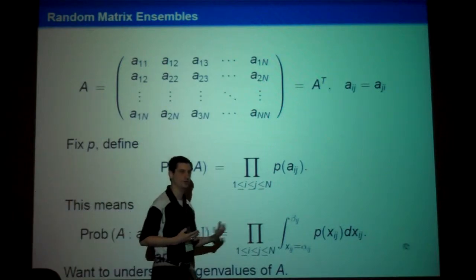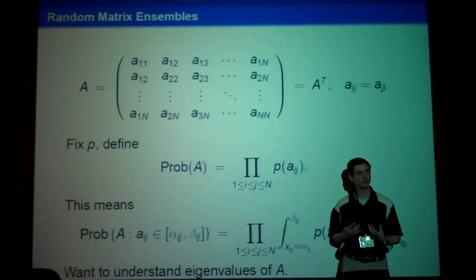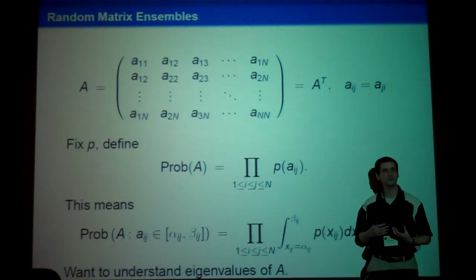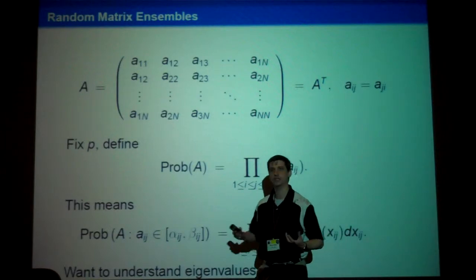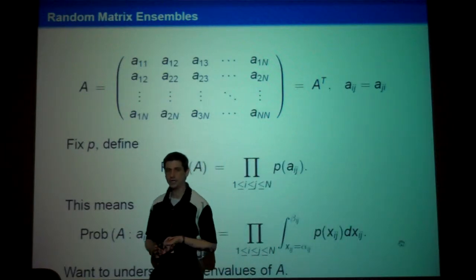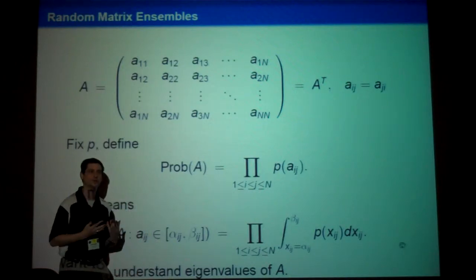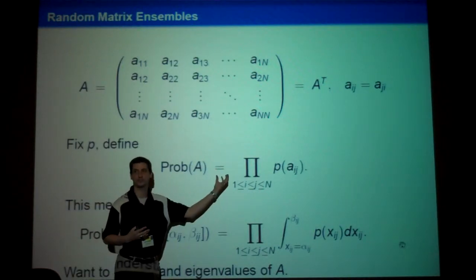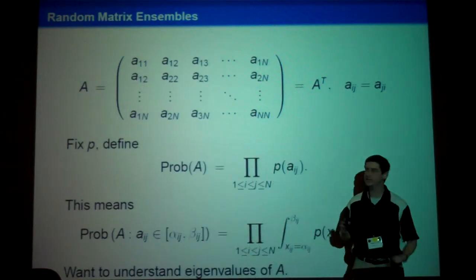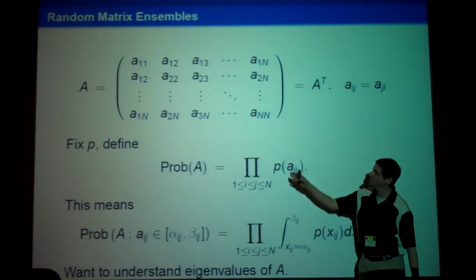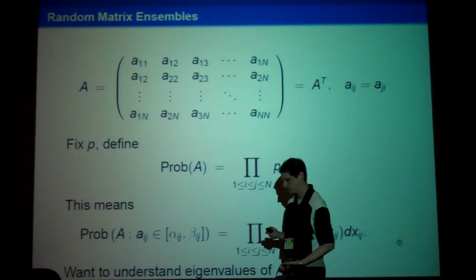From a number theory point of view, this random matrix model was very influential in the early days of the subject. Nowadays people look at classical compact groups, partly because of similarities with the function field case and monodromy, and also because there's a very canonical sense of how you choose a matrix from a classical compact group — you use Haar measure. For number theory today these Wigner-style matrices are not used as much, but from a historical perspective it's nice to see where the subject came from.